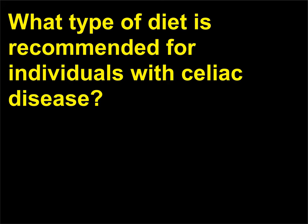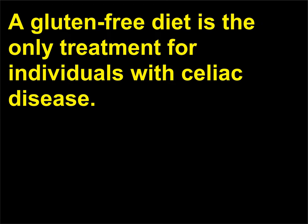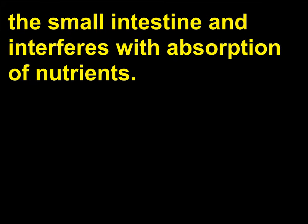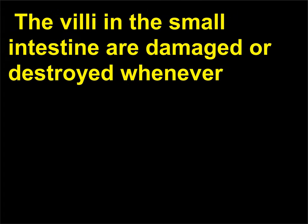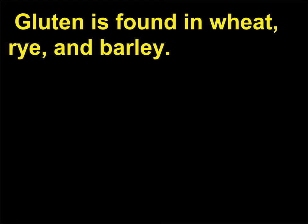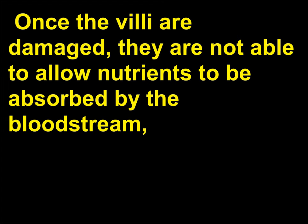What type of diet is recommended for individuals with celiac disease? A gluten-free diet is the only treatment for individuals with celiac disease. Celiac disease is an autoimmune digestive disease that damages the small intestine and interferes with absorption of nutrients. The villi in the small intestine are damaged or destroyed whenever sufferers of celiac disease eat products that contain gluten. Gluten is found in wheat, rye, and barley. Once the villi are damaged, they are not able to allow nutrients to be absorbed by the bloodstream, leading to malnutrition.